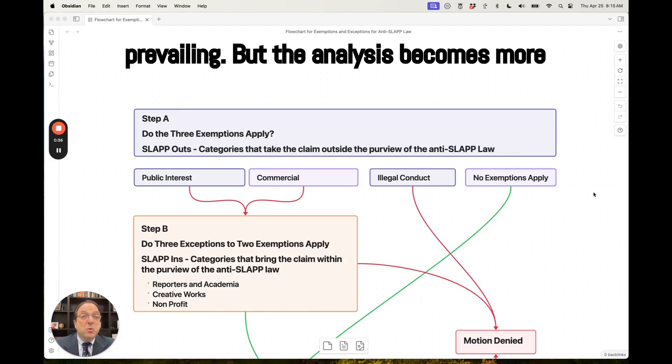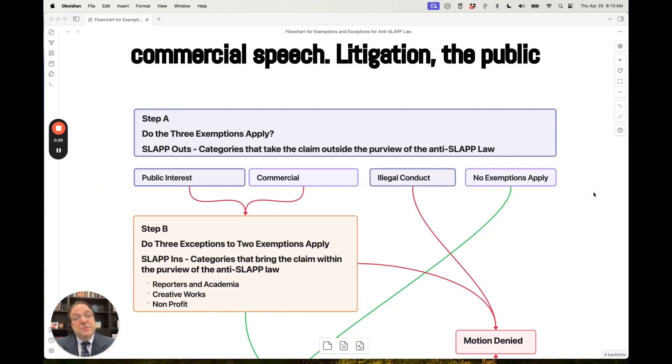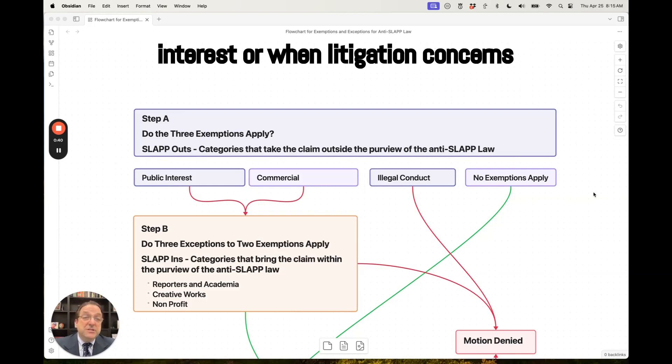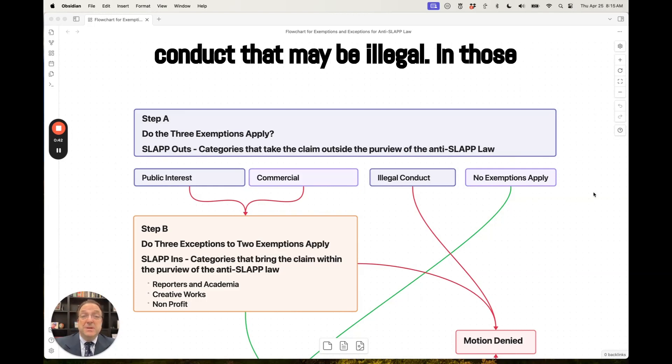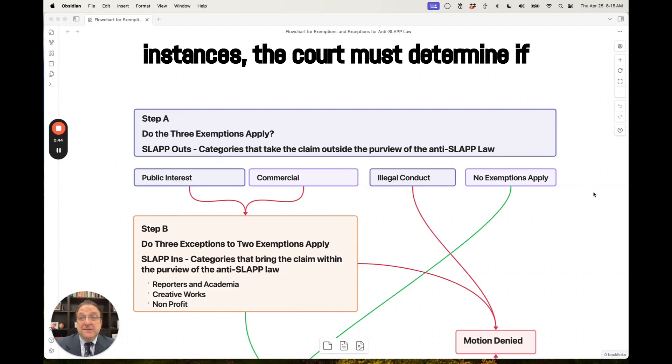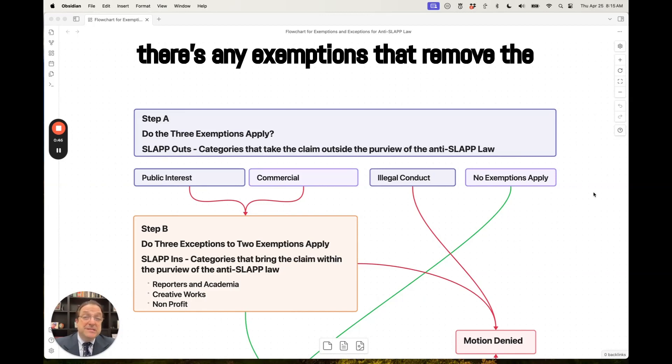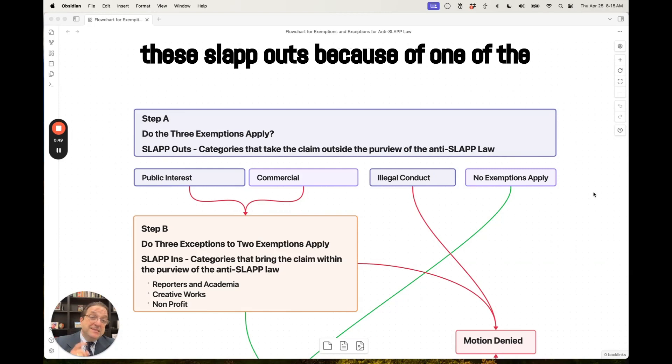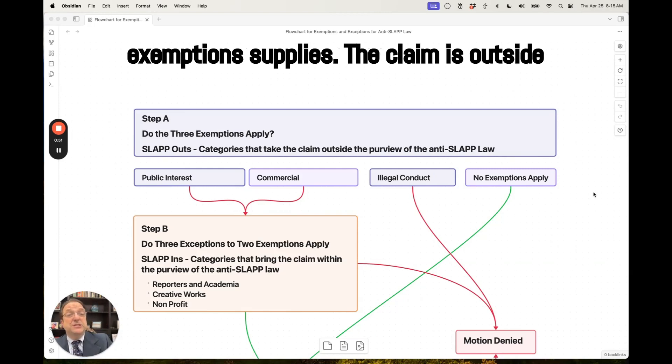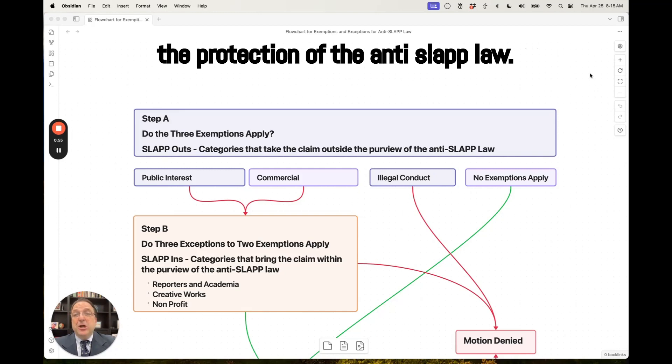The analysis becomes more complex when you're dealing with commercial speech, litigation in the public interest, or when litigation concerns conduct that may be illegal. In those instances, the court must determine if there's any exemptions that remove the claim from anti-SLAPP protection. I call these SLAPP outs because if one of the exemptions applies, the claim is outside the protection of the anti-SLAPP law.